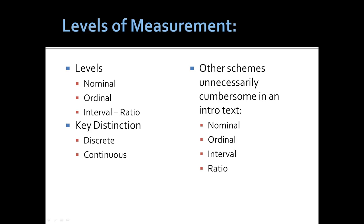Discrete refers to categories that are closed and finite, such as political party — democrat, republican. Continuous is a numerical scale in which the values or the possibility of values are infinite. The key indicator is whether or not you can add, subtract, multiply, and divide.